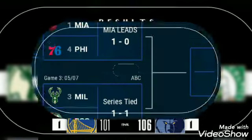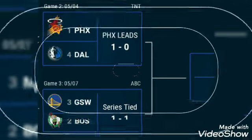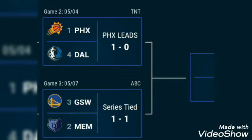Now we will see the separate Eastern Conference analysis and the Western Conference analysis. In the Eastern Conference, the Heat is leading 1-0, and the other two teams — the Celtics and the Bucks — are tied 1-1. In the Western Conference, the Suns are leading 1-0, whereas the Warriors and the Mavericks are both at 1-1 in their series.